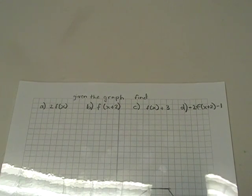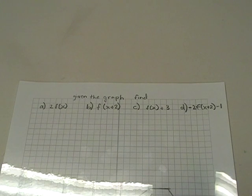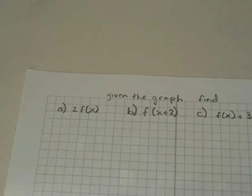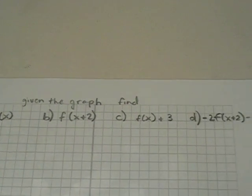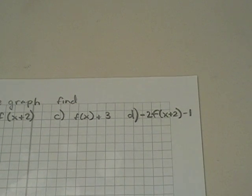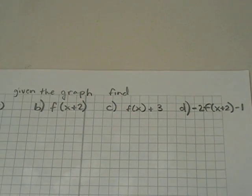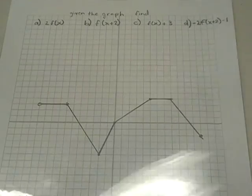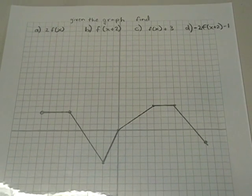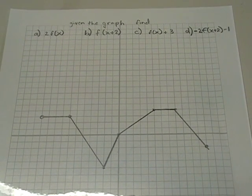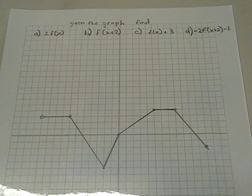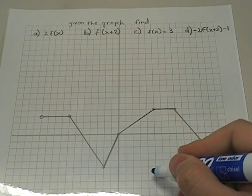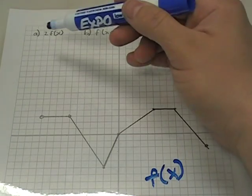Today, we've been told that given the graph of f of x, they want us to find a couple of different things: 2f(x), f(x+2), f(x)+3, and negative 2f(x+2) minus 1. The easiest way for me to demonstrate this is we're going to zoom out just a little bit and use a transparency over top of the original graph.